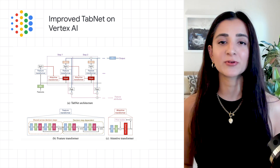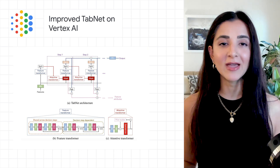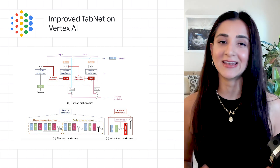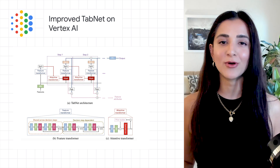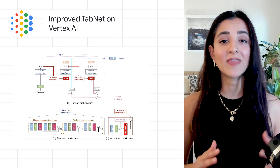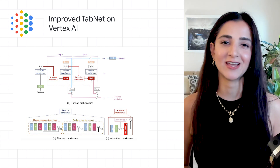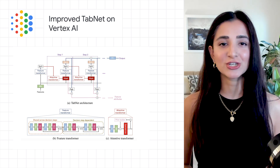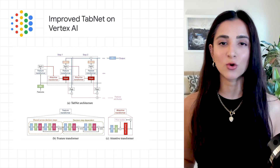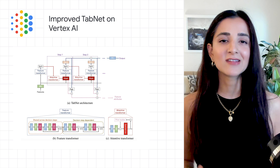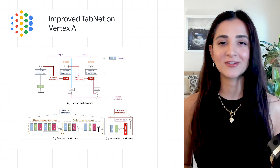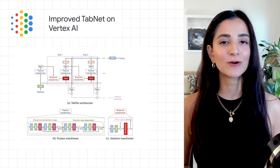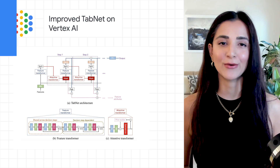Tabular Workflows provides fully managed, optimized, and scalable pipelines, making it easier to use and deploy TabNet without worrying about implementation details. To learn more about the TabNet architecture, including the sequential attention mechanism, as well as the benefits of running this model on Vertex AI Tabular Workflows, check out the blog below.